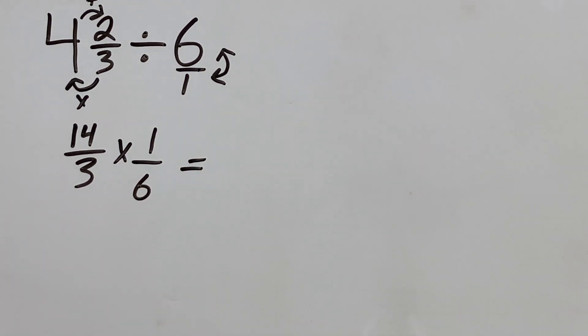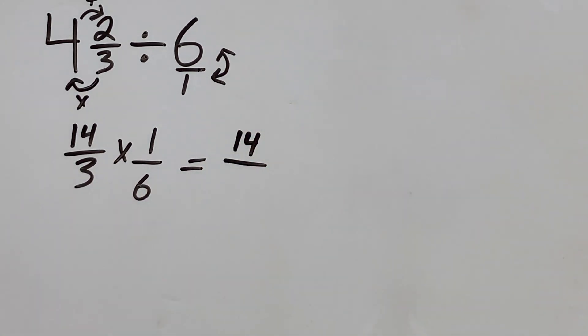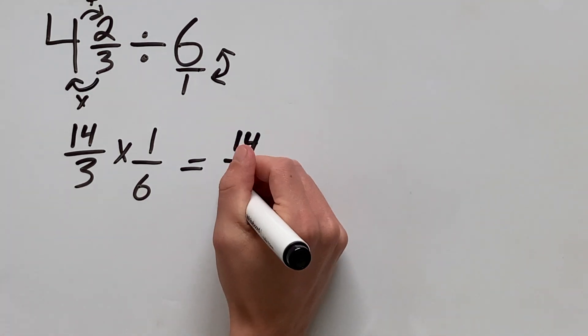Now we can just multiply across. So we have 14 times 1 which is 14 and 3 times 6 which is 18.